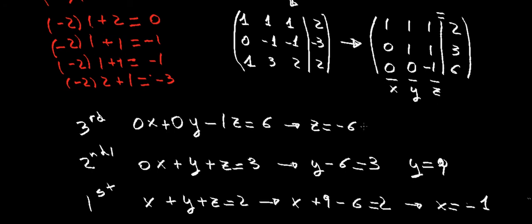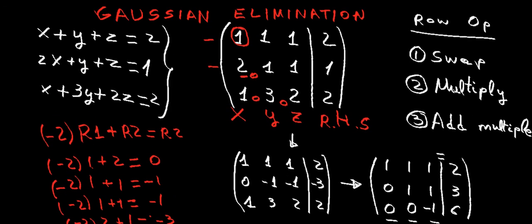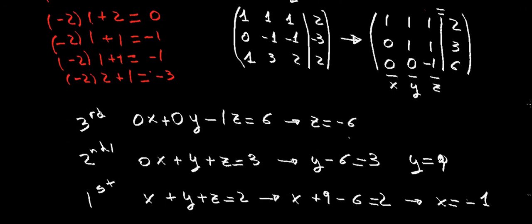So x equals minus 1, y equals 9, and z equals minus 6. As an overview: we started with the system of simultaneous equations, wrote it as a matrix, then performed row operations — one of those three types — to get zeros in the three positions below the diagonal. We have an example of one of those operations, and the final matrix has that lower triangle of zeros.